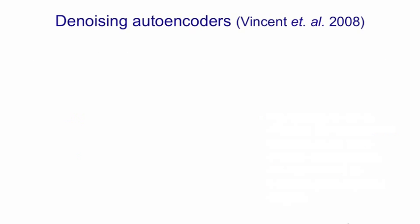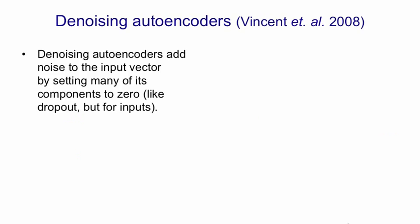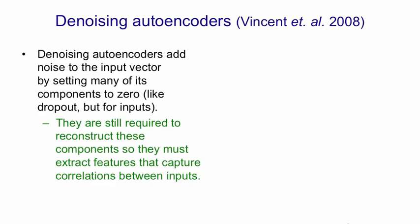However, there's a different kind of autoencoder that does work as well, and that's the denoising autoencoder that's been studied extensively by the group in Montreal. The denoising autoencoders work by adding noise to each input vector by setting many of the components to zero, but it's different components for different input vectors. This resembles dropout, but it's for the inputs rather than the hidden units. The denoising autoencoder is still required to reconstruct the inputs that have been set to zero.